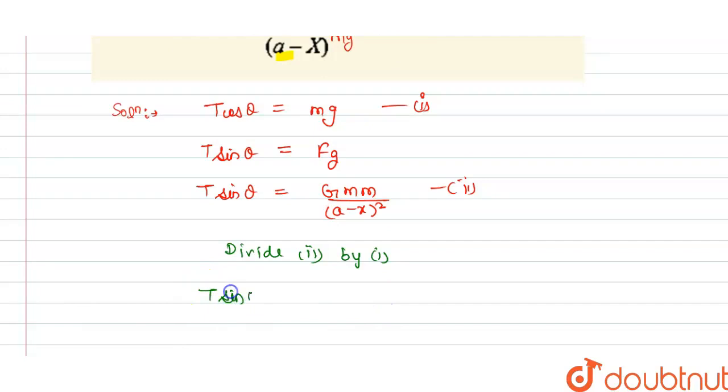So we get T sin theta divided by T cos theta is equal to Gm² divided by (a-x)² and this is divided by mg. So T cancels out.